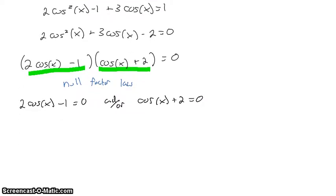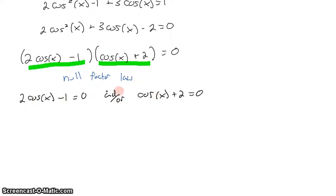Now, this allows me to separate them into two equations that are each solvable for X. I'll subtract 2 to the other side, and I'll get cosine of X is equal to negative 2. I'll add the 1 to the other side and divide by 2. That tells me that cosine of X is equal to 1 half.